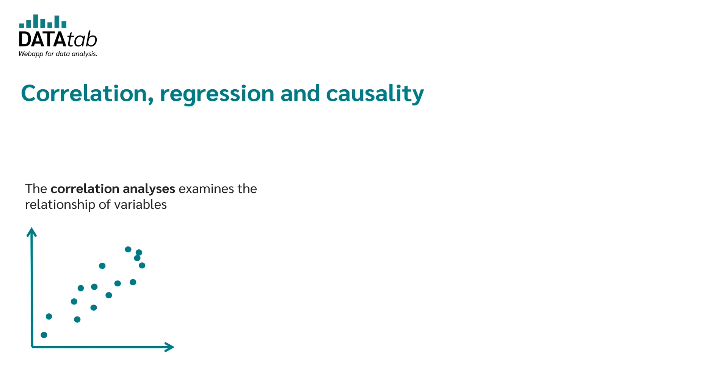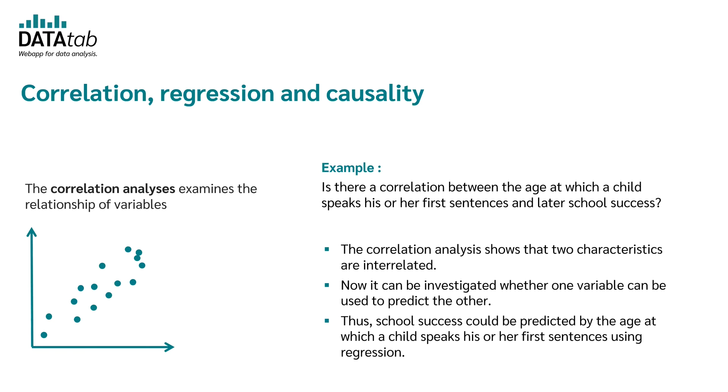As you already know from our video on correlation, correlation analysis examines the relationship of variables. One question might be: is there a correlation between the age at which a child speaks his or her first sentences and later school success? The correlation analysis shows that two characteristics are interrelated.